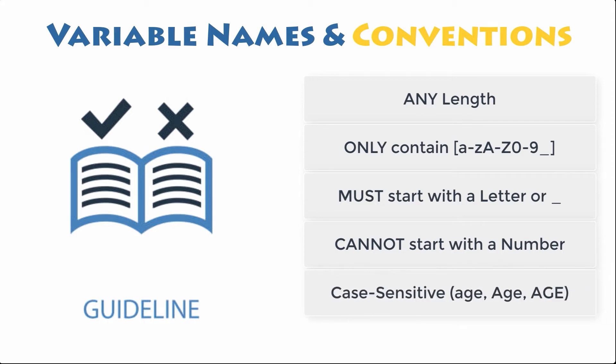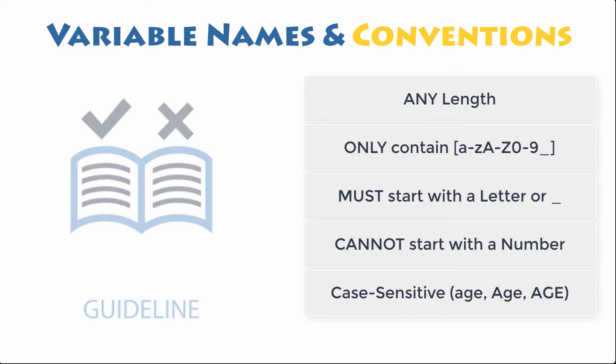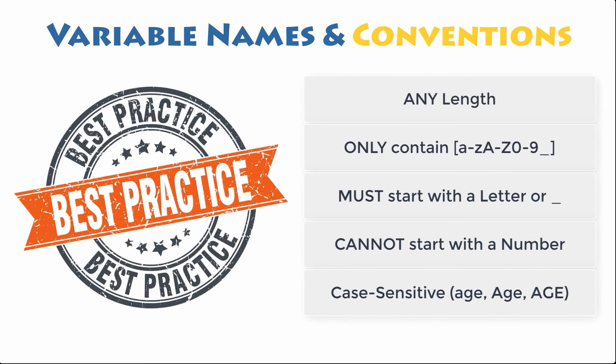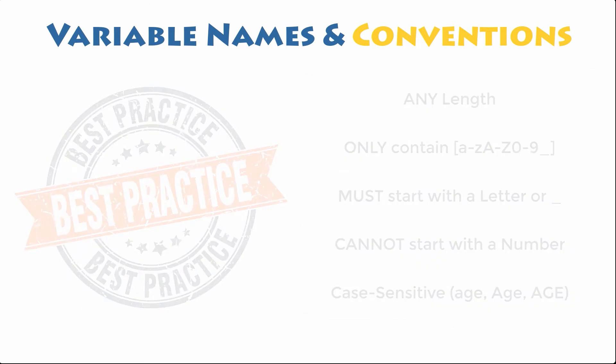Moreover, variable names are case sensitive, which means that Age, age, and AGE are three different variables.